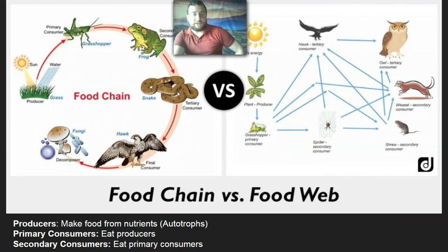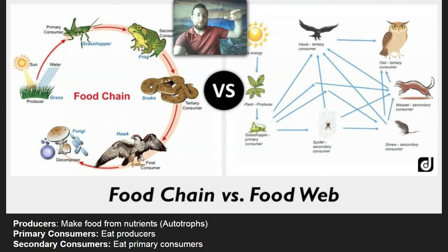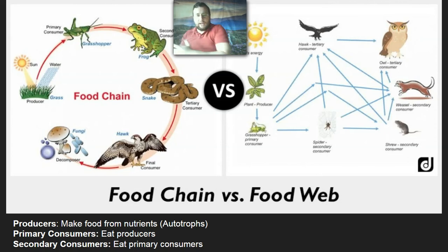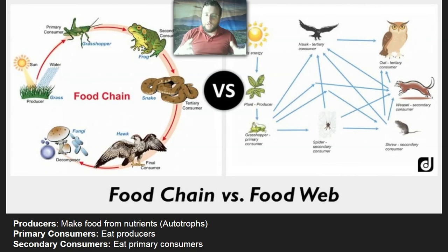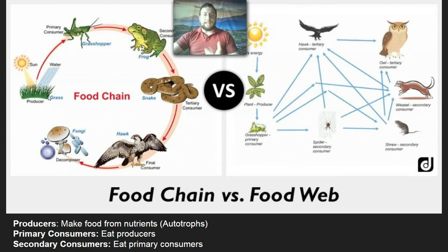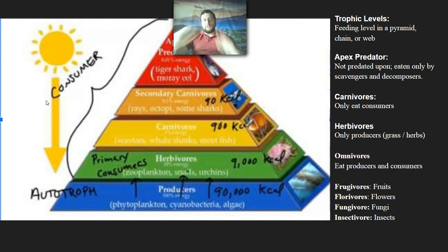Then you have a tertiary consumer, which eats the frog, like a snake. The snake might be eaten by a hawk, which would be a quaternary or final-level consumer. All of these things eventually die and get eaten by decomposers. The matter flows from the producers through each organism as they eat one another, and through that process the actual atoms or matter moves from organism to organism through the food. The energy inside the food also gets transferred, except it gets used up and lost as heat with each transfer because organisms need it to survive.